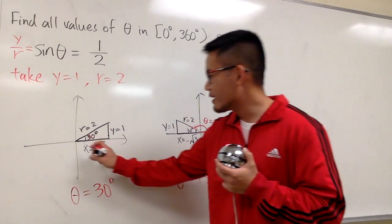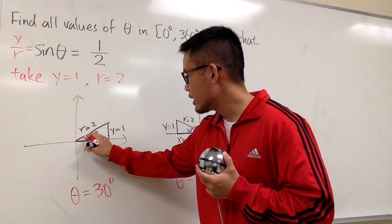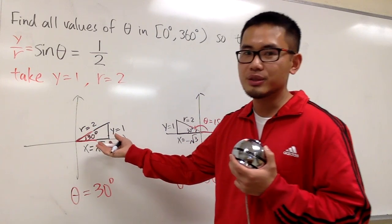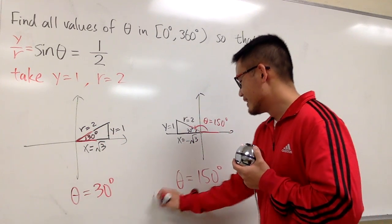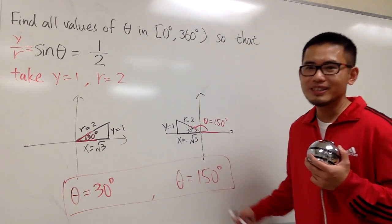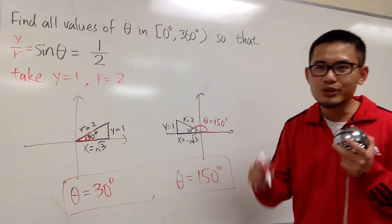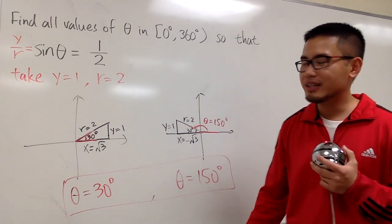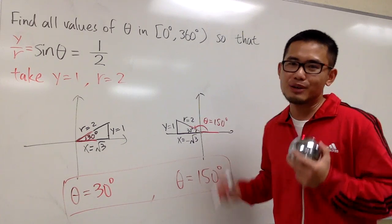This right here was just from here to the terminal side already—that's the 30 degrees. So here are the two answers. That's it. Be sure to draw pictures, and this time we're just doing it backwards.